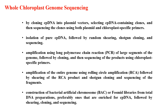Now we will see chloroplast genome sequencing techniques. In the past, sequencing was done by cloning cpDNA into plasmid vectors, followed by sequencing. Another technique used isolation of pure cpDNA followed by random shearing, shotgun cloning, and sequencing. More recently, amplification of the whole genome using rolling circle amplification (RCA) followed by shearing of the RCA product and shotgun cloning has been used. With the newest technology such as Illumina sequencing, sequencing can now be done in a few minutes.